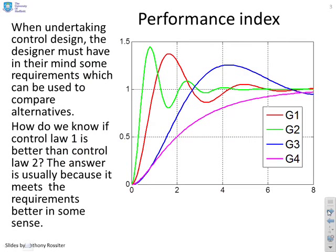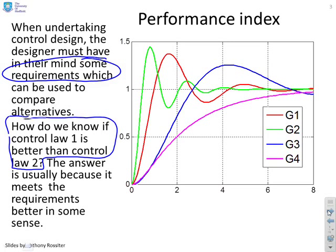Now when you're undertaking control design, the designer must have in their minds some requirements which they can use to compare alternative strategies. Otherwise, how do we know whether controller one is better than controller two or vice versa? Now the normal answer is, if it meets the requirements better, then it must be a better controller. But what are your requirements? Now we've got an example here for you to look at.